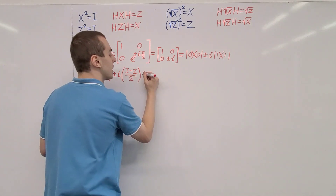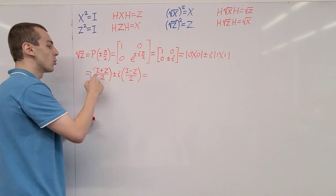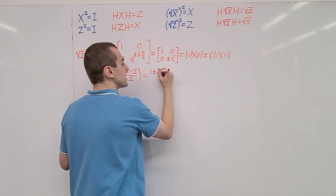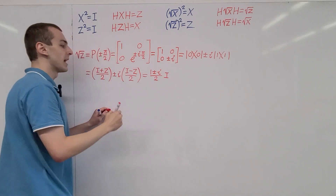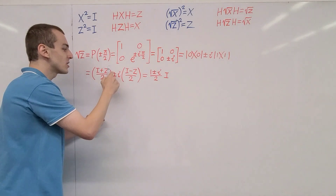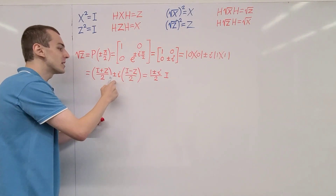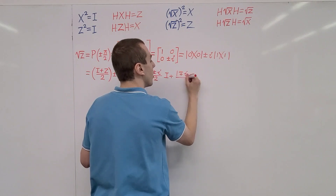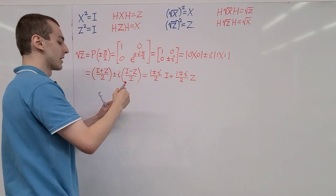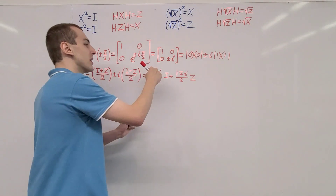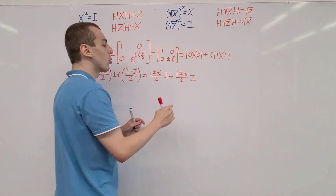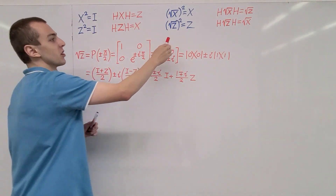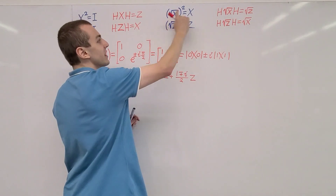Rearranging, we notice that combining the identity terms gives us 1 plus or minus i over 2 times the identity. For the Pauli Z term, the sign flips, giving us 1 minus-plus i over 2 times Pauli Z. So these are the two possible cases — either the plus case over here with a minus appearing for Z, or the minus case over here with a plus appearing for Z. This gives us the square root of Z, or the two possible gates satisfying this relationship.